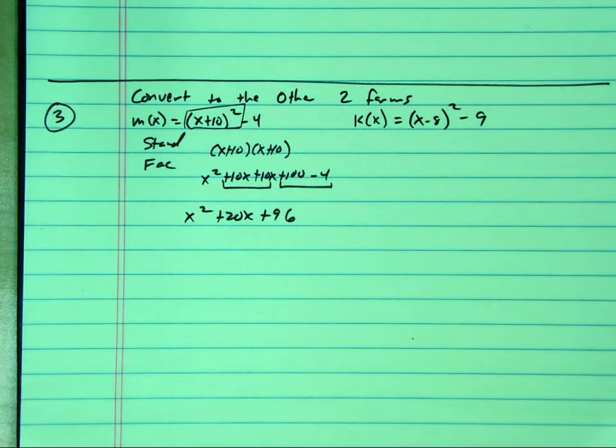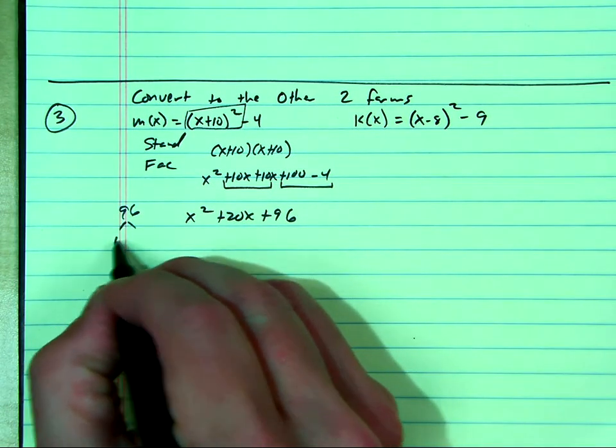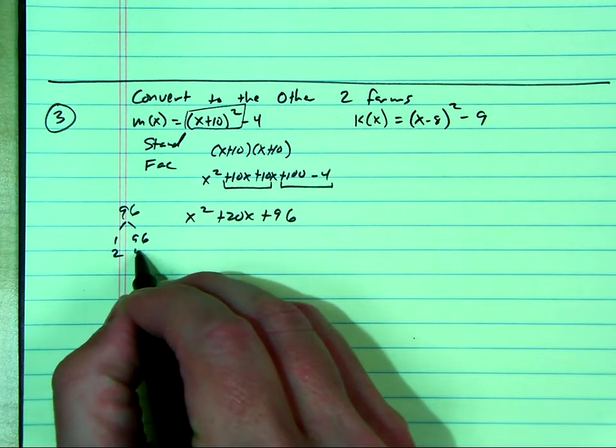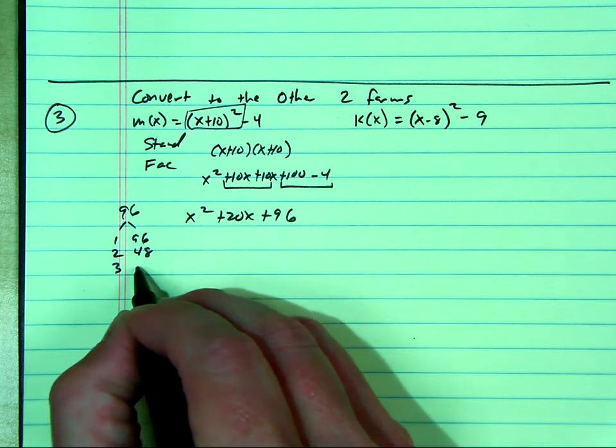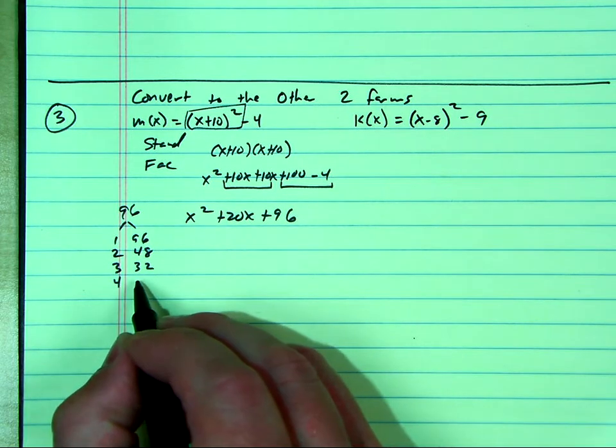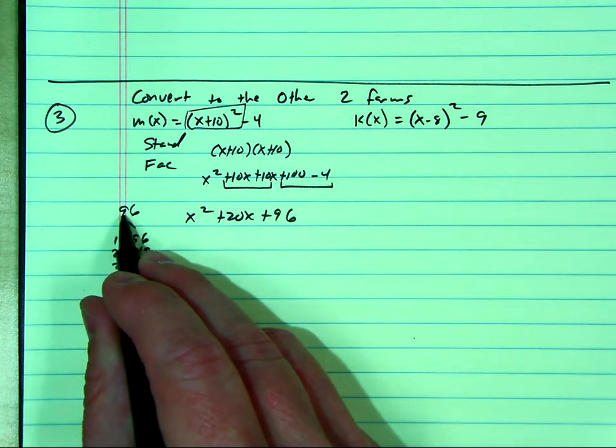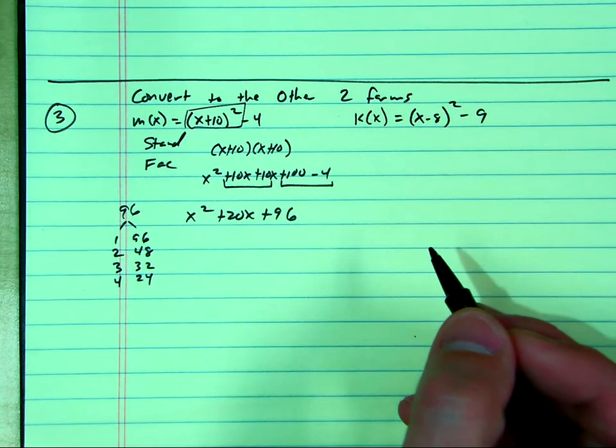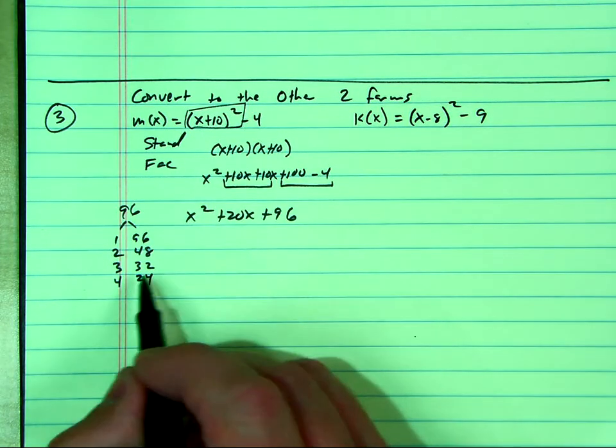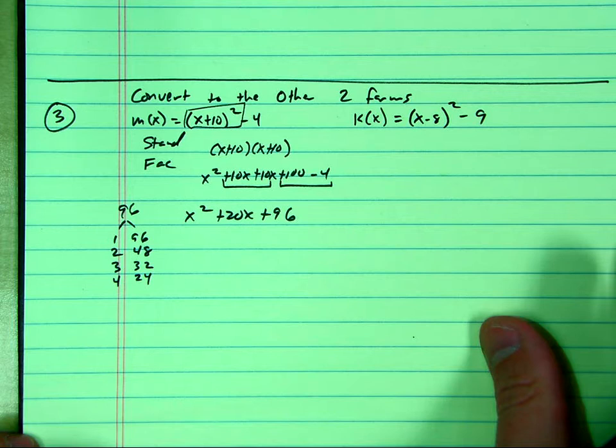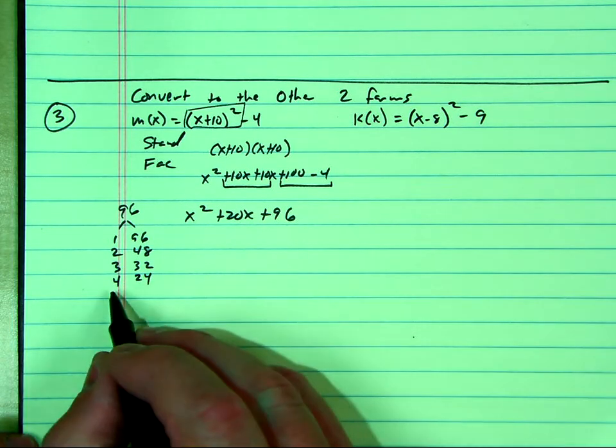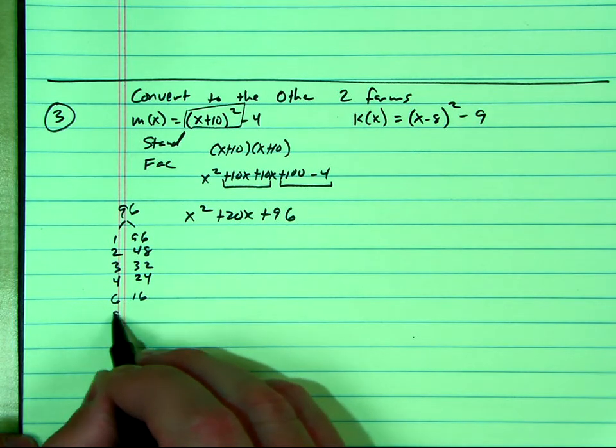Okay, uh-oh. I don't think this one factors. Do you guys think this one factors? I don't think it does. Oh, there it is. 4 and 16. No, it's 4 and 24. There it is. Nope. This one doesn't factor. That's odd. Oh, there it is. 8 and 12.